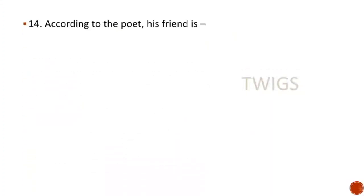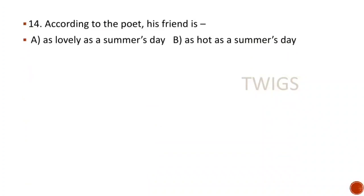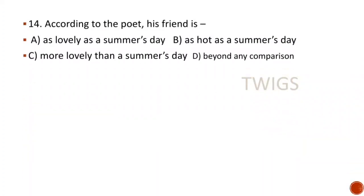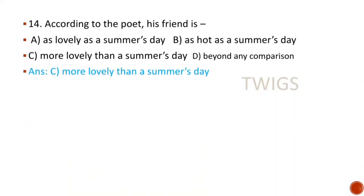MCQ number 14: According to the poet, his friend is — as lovely as a summer's day, as hot as a summer's day, more lovely than a summer's day, beyond any description. Here the right answer is option C. According to Shakespeare, his friend is more lovely and temperate than a summer's day.